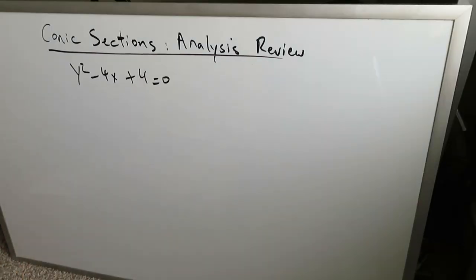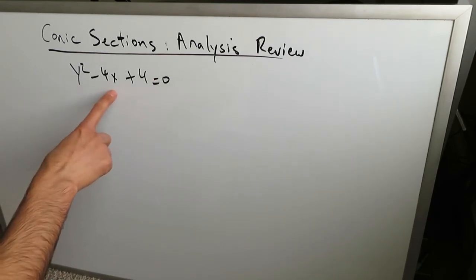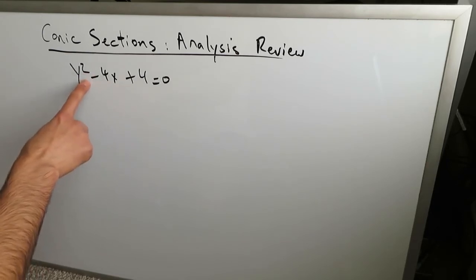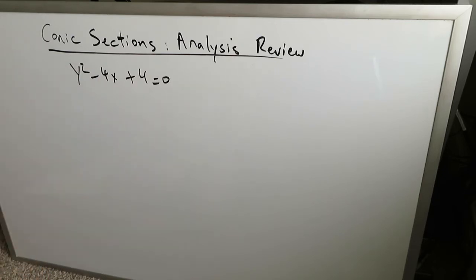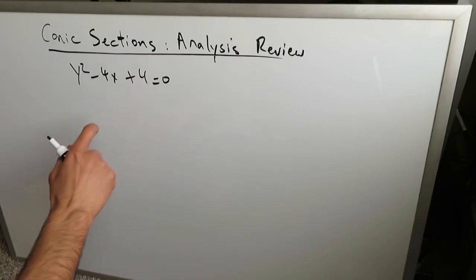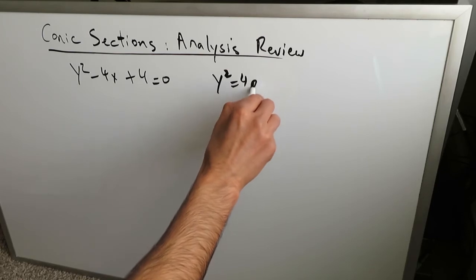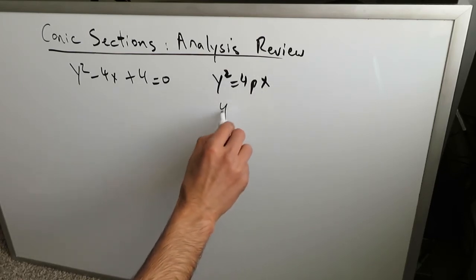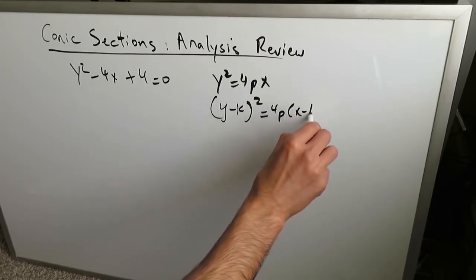When you see either an x-squared or a y-squared where one is second degree and the other is first degree, you should always be thinking about a parabola. This represents an equation of a parabola, and the constant indicates some sort of translation. So you should be thinking of y² = 4px, or in translated form, (y − k)² = 4p(x − h).